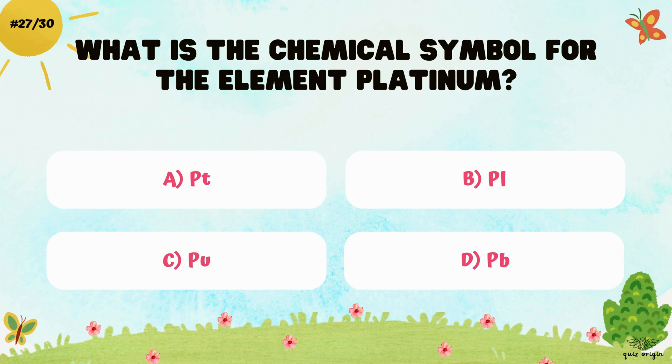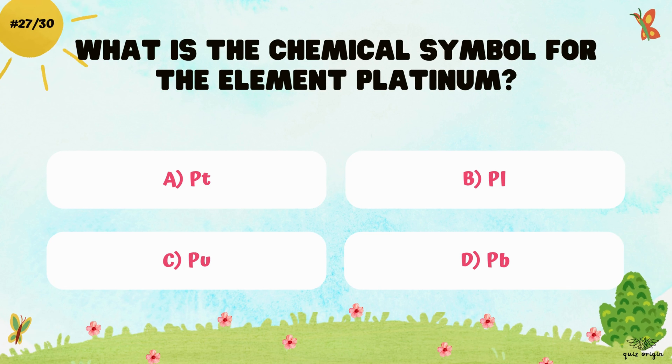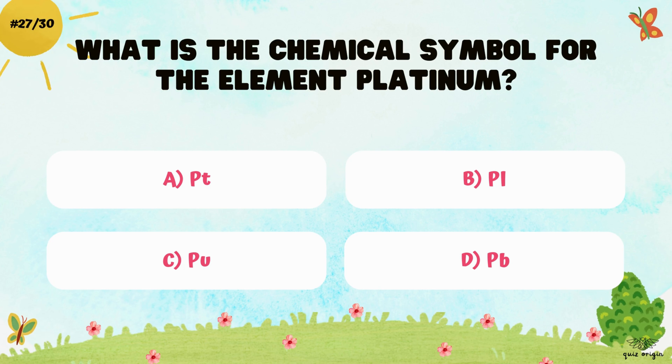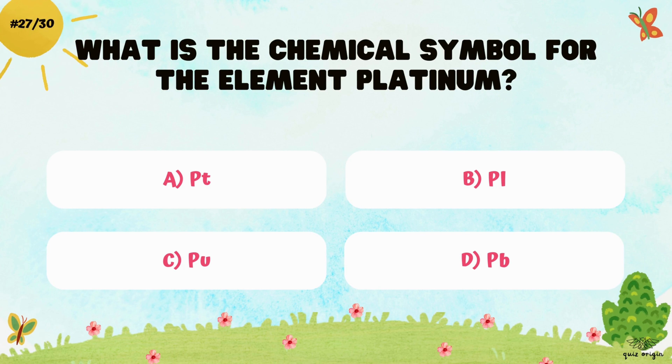What is the chemical symbol for the element platinum? A. Pt, B. Pl, C. Pu, and D. Pb.